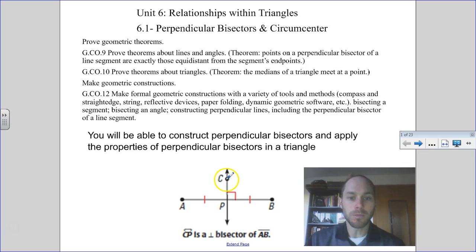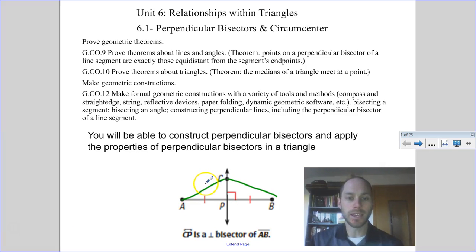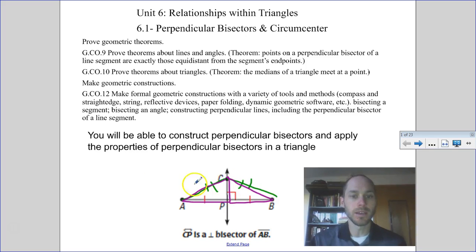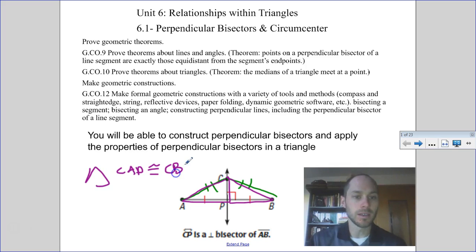So what do we notice about point C? C, it appears, is equal distance from points A and point B. So the question is, why is AC congruent to CB? How do we know that? Let's take what we've learned about triangles — we have two different triangles there: triangle CAP and triangle CBP. If triangle CAP is congruent to triangle CBP, then we know the corresponding parts have to be congruent.